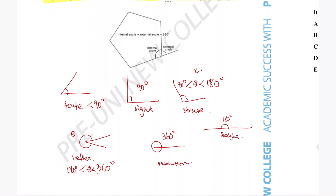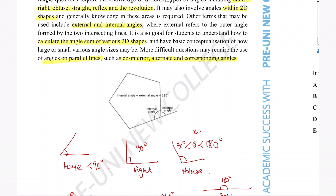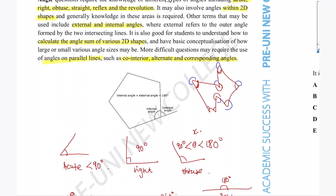Those are handy for labeling the types of angles we see in different shapes. The next names we need to be familiar with are internal and external angles. If you have any kind of 2D shape, an internal angle is the angle formed inside the shape. External angles are the ones on the outside of the shape, as shown in the example here.